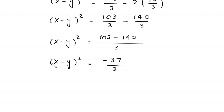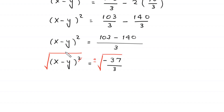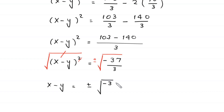From here we take the square root of both sides. The square cancels with the square root, and we are left with x minus y is equal to plus or minus the square root of negative 37 over 3.